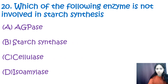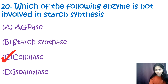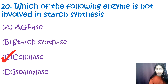Question 20: Which enzyme is NOT involved in starch synthesis? Options are AGPase, starch synthase, cellulose, and isoamylase. The correct option is C — cellulose. AGPase (adenosine diphosphoglucose pyrophosphorylase), starch synthase, and isoamylase all play crucial roles in starch biosynthesis, whereas cellulose is a polysaccharide present in plant cell walls that breaks down into glucose units and is not involved in starch synthesis.